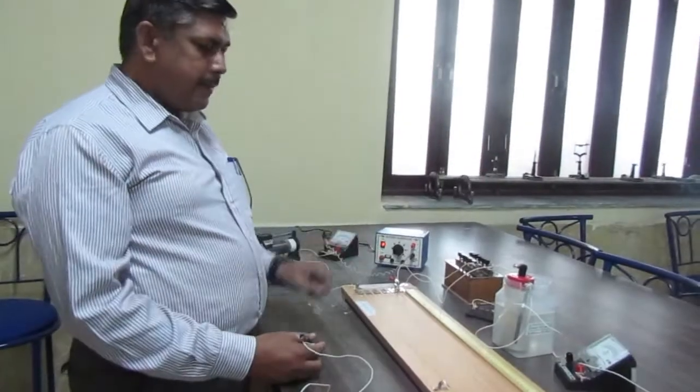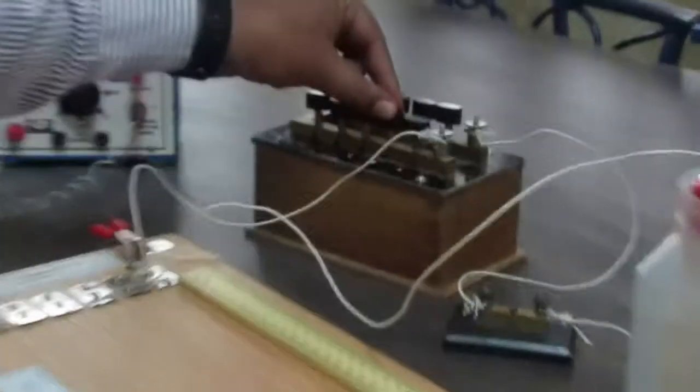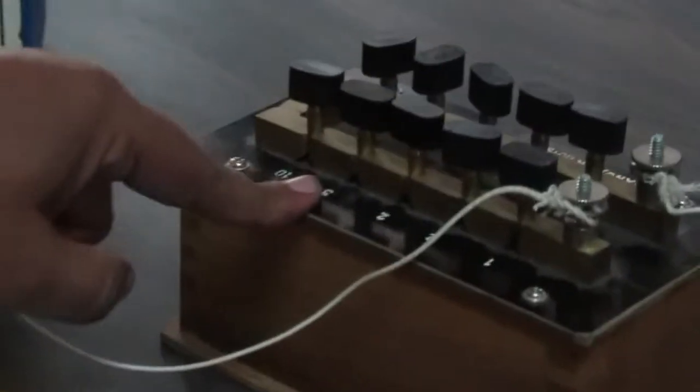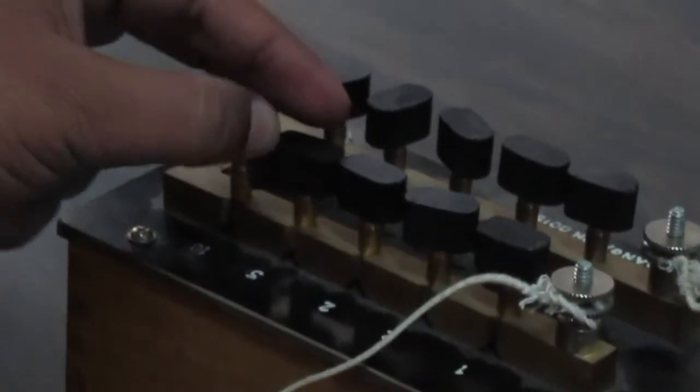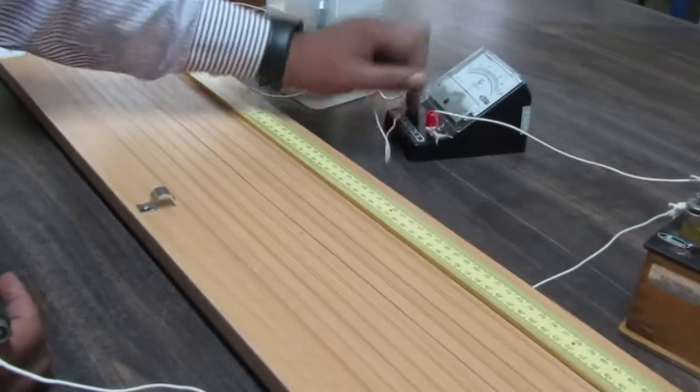First reading with the circuit open. You need to place the jockey on the potentiometer wire and observe the galvanometer deflection.